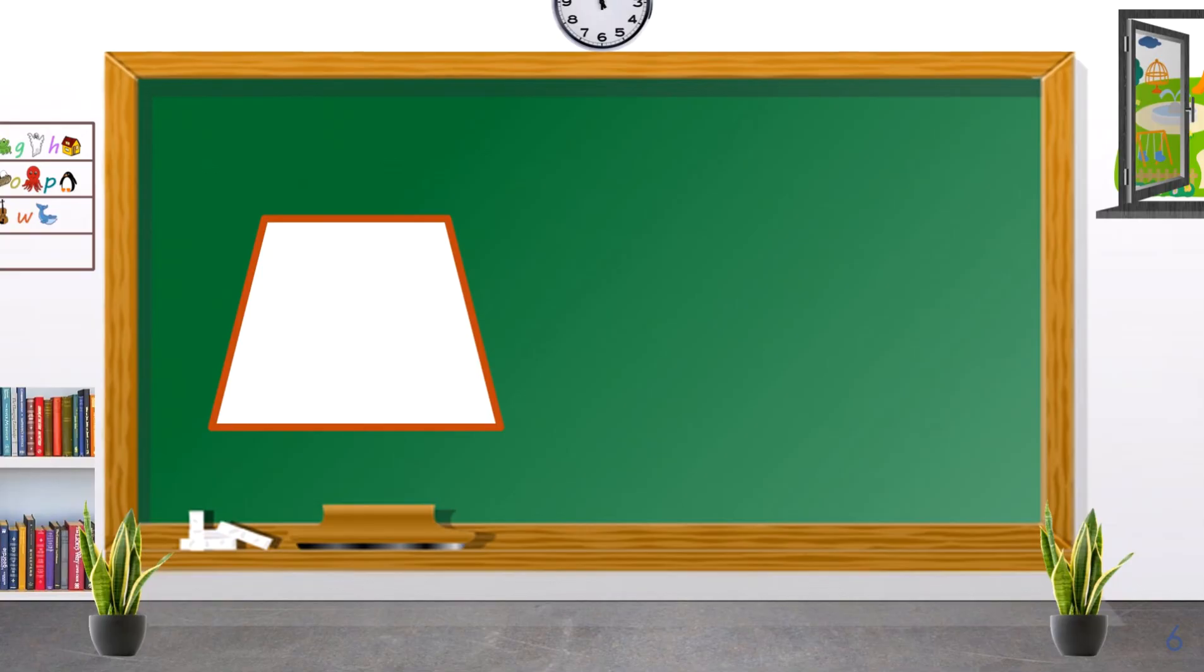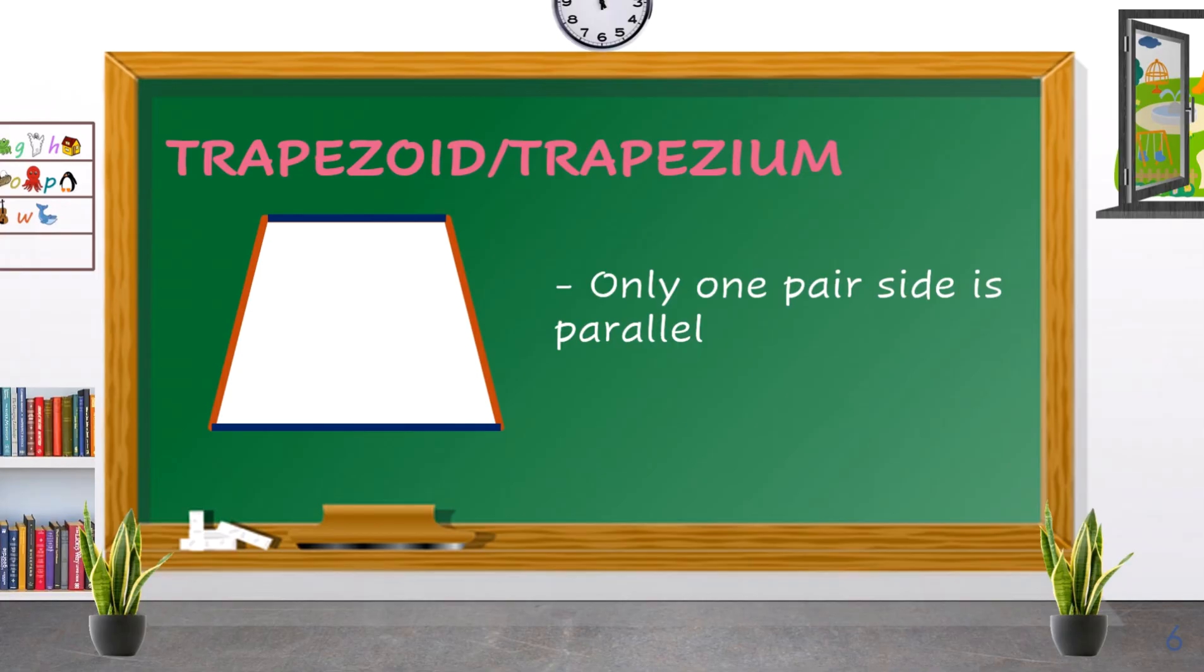The next type of quadrilateral has only one pair of sides that is parallel. This is what we call a trapezoid.